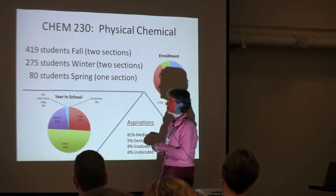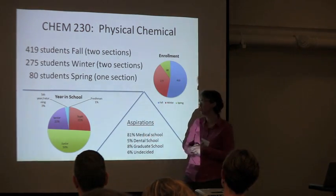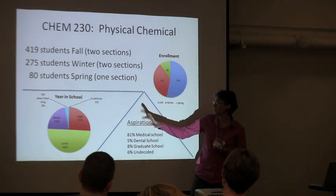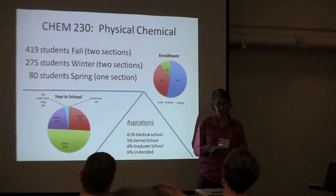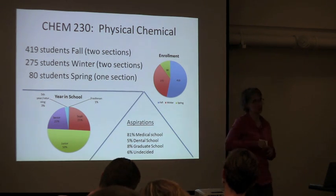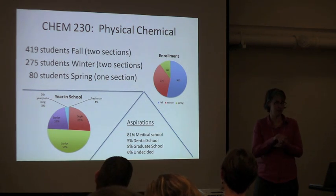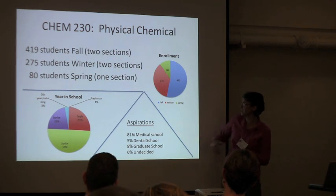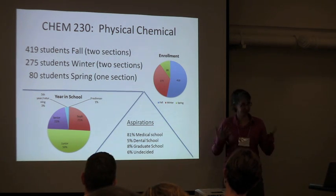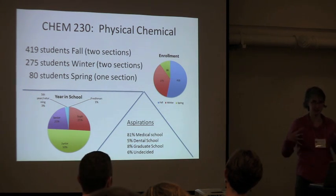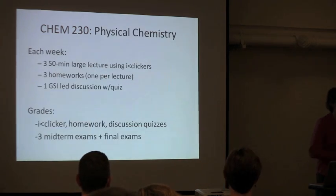In terms of grade level, I have some variability. About half the students in the course are juniors, about a quarter sophomores and a quarter seniors, and then some fifth-year students who are returning because they haven't fulfilled all of their pre-medical requirements. Aspirations: 81% aspire to med school, which is mostly what you need to know — 5% to dental, and then others to graduate school or still undecided. So that's the core of students that I have.